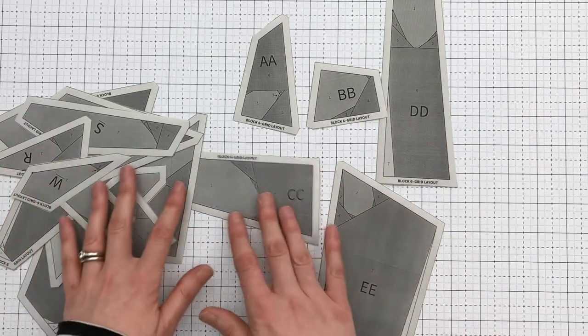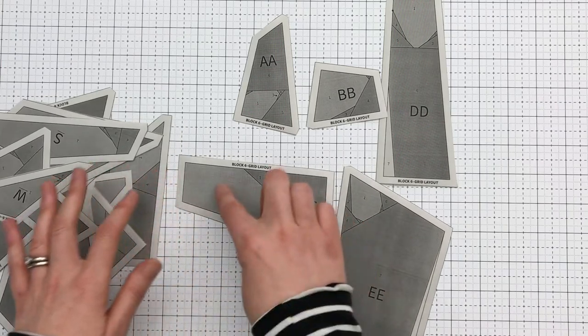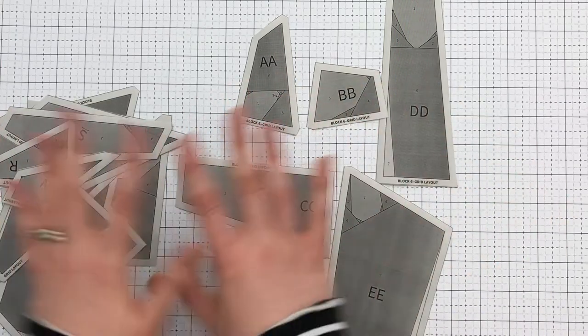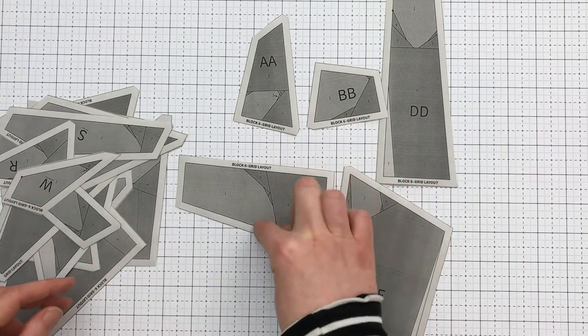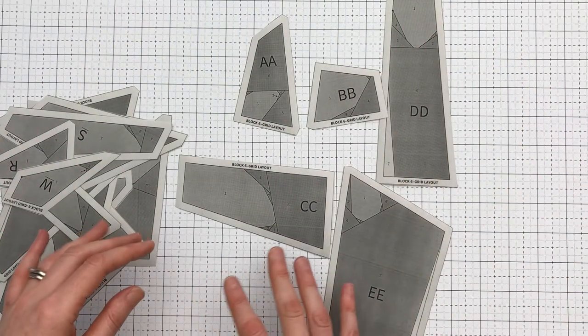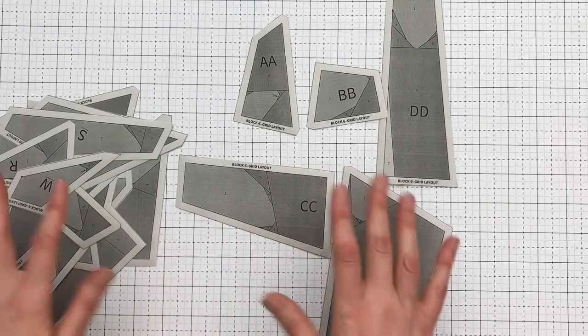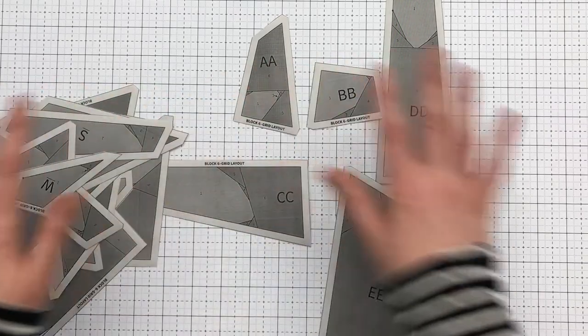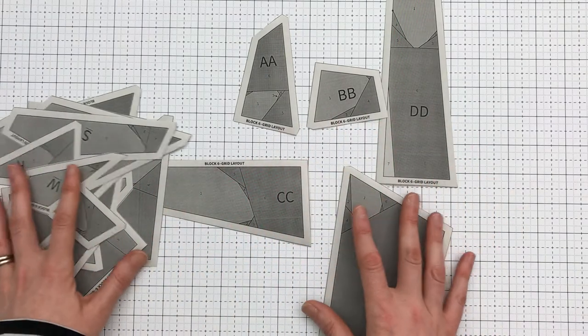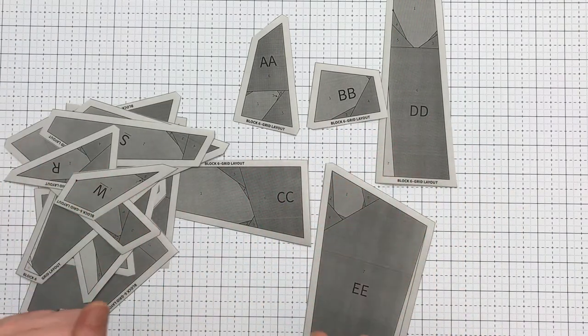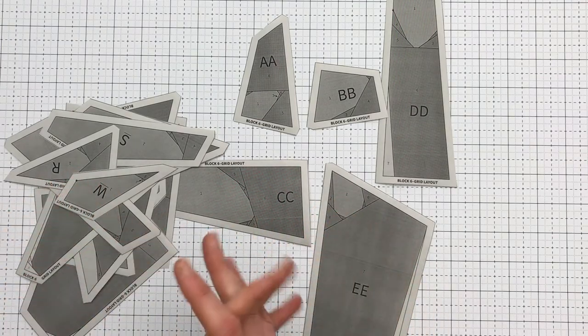And then I will attach section one to all of my paper pieces, then I'll go through and sew on section two for all the paper pieces, trim them all, press them all, and then move on to section three for all of them. I repeat that process until all the paper pieces are filled. Some of them will fill up faster than others sometimes.